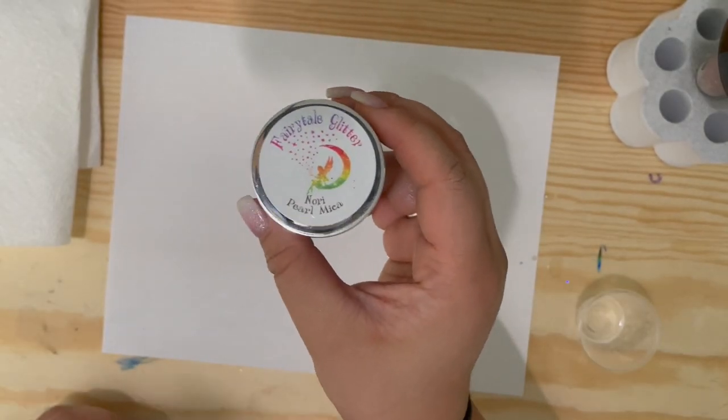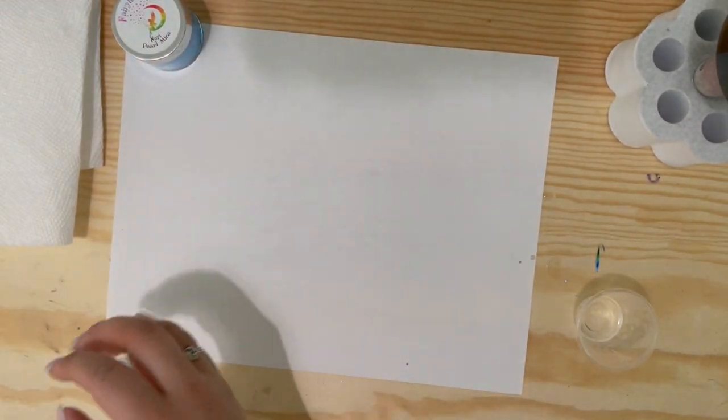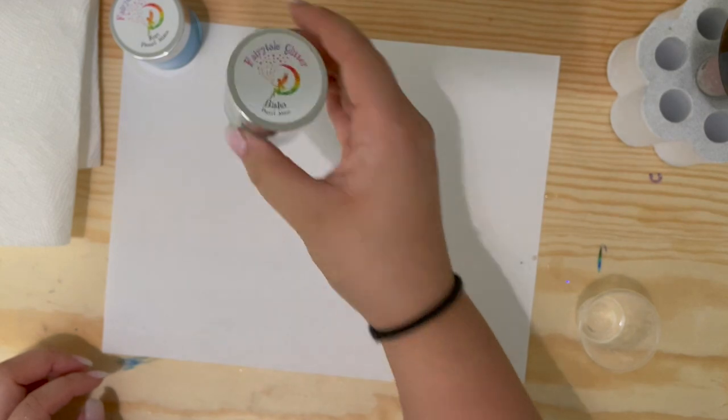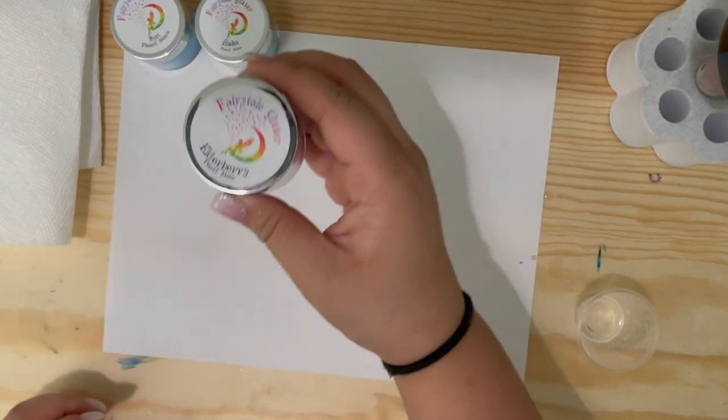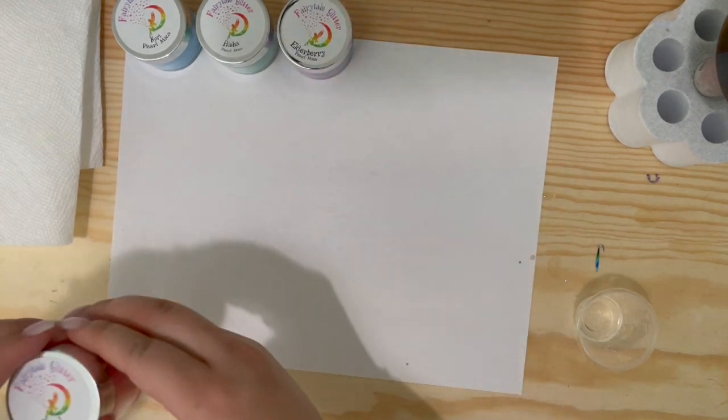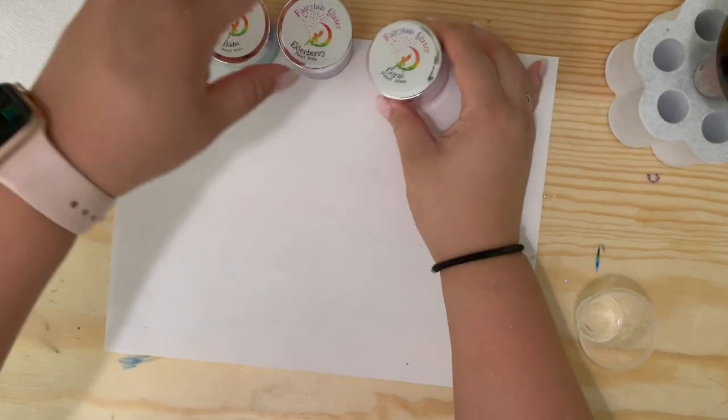Now that my epoxy is all on, I'm going to be setting up my mica powders. This one is Nori. The green one is called Aisha. I have a purple one and it is called Elderberry. And then the last one, which is a pink, is Coral.